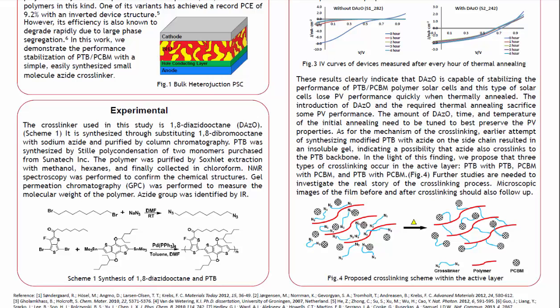Microscopic images of the film before and after crosslinking should also follow up. In conclusion, we have synthesized and characterized the crosslinker 1,8-diazidooctane, capable of crosslinking materials in the active layer of PTB polymer solar cells. We have shown that devices with diazidooctane exhibit stable PV performance after prolonged heating. This crosslinking strategy may be applied to achieve polymer solar cells with longer lifetimes.